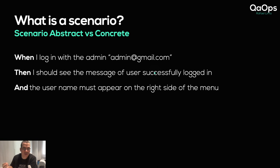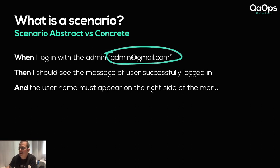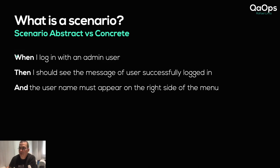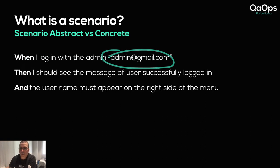Of course your code needs to know what the login page is and how to access it, but when you say 'I log in' you don't need to state you are on the login page. We can improve further because here I'm using the actual data of the admin — the email. Do I really need the data? Maybe it could be in the code somewhere. I can change this to: When I log in with the admin user — the rest stays the same.